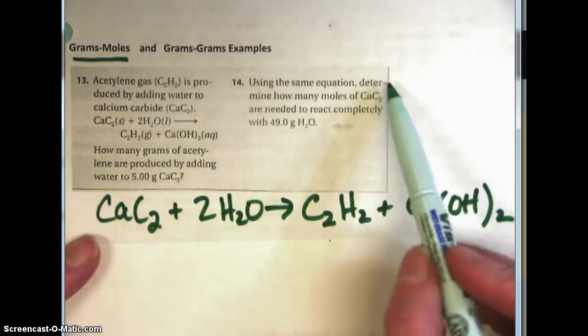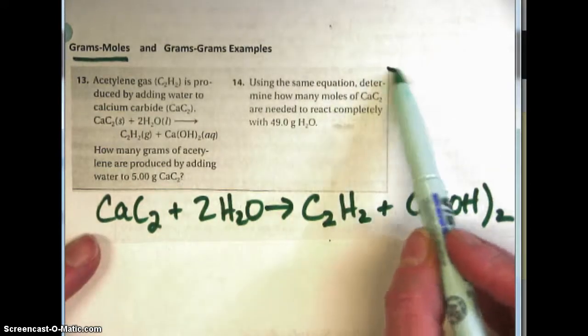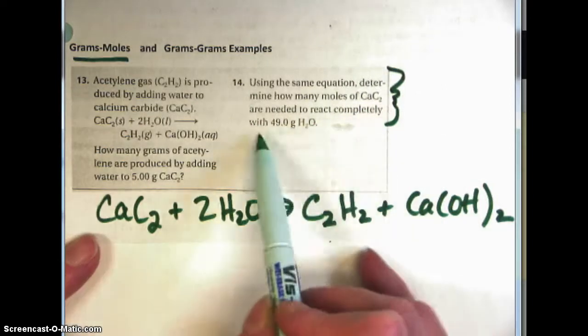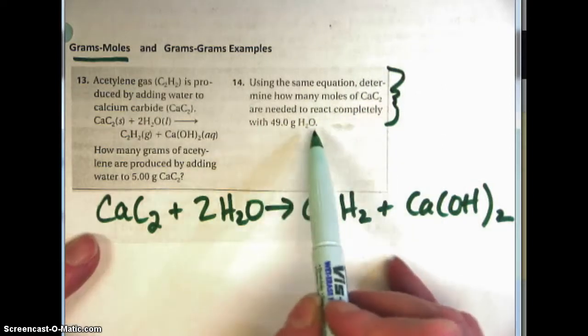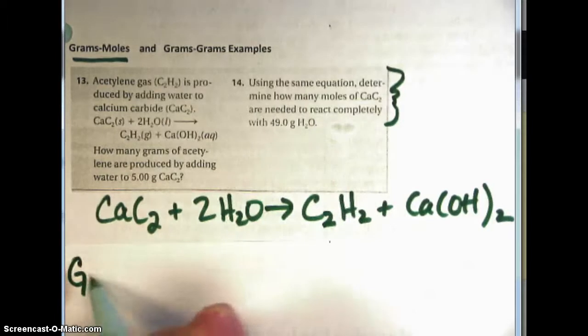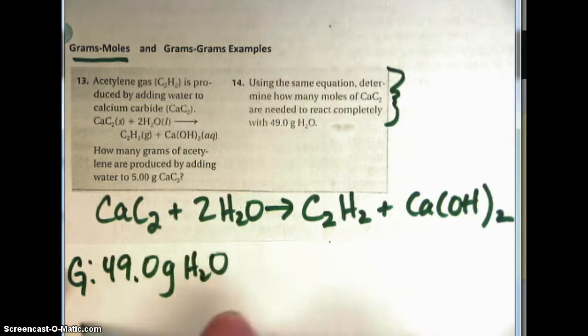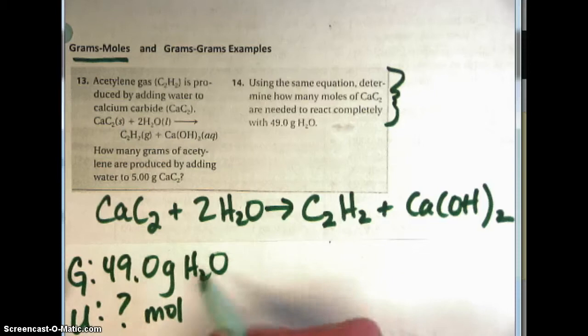And so what we're going to do is we're going to determine how many molecules of calcium carbide are needed to react completely with 49 grams of water. So we're going to write down the given which is 49 grams of water. The unknown is how many moles of calcium carbide are needed.